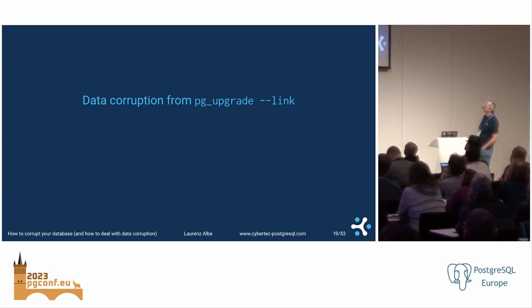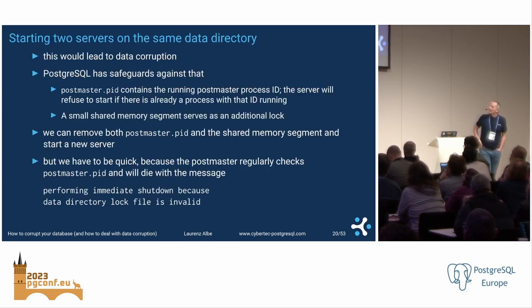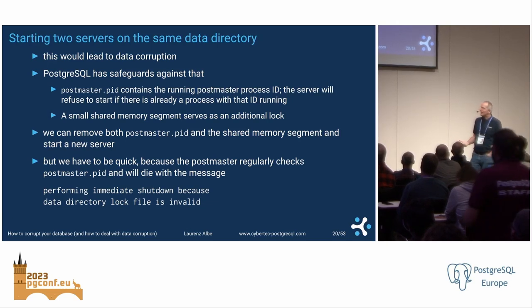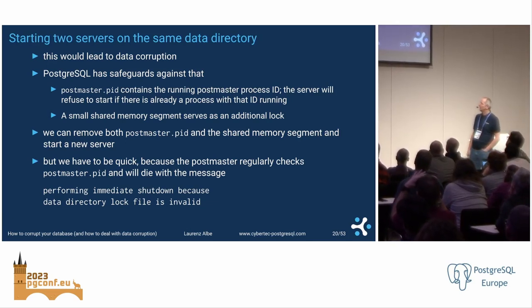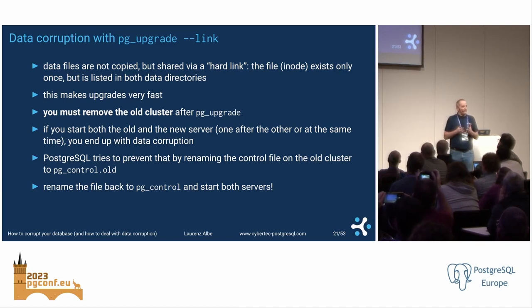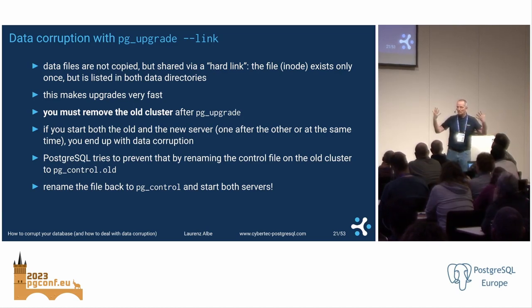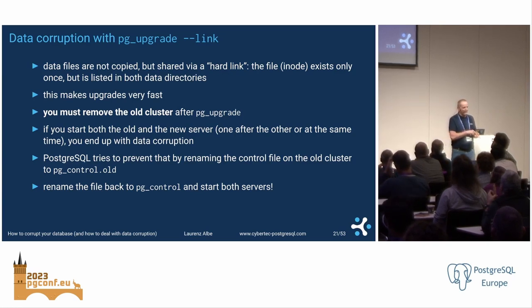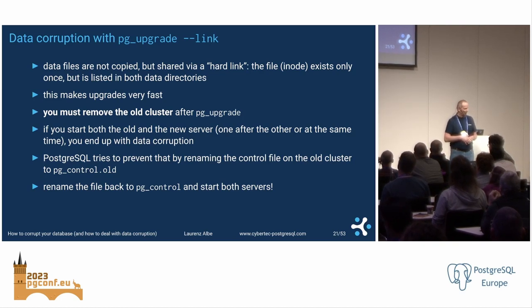The next nice way to corrupt a database is pg_upgrade --link. The trick is that it starts two servers on the same files. You have two clusters that point to the same files with hard links — that's very fast during upgrade. But you must remove the old cluster because they both reference the same files. pg_upgrade adds a safeguard by renaming the control file from the old cluster so you can't accidentally start it, but it's very easy to undo that renaming and start both servers. And there you go.